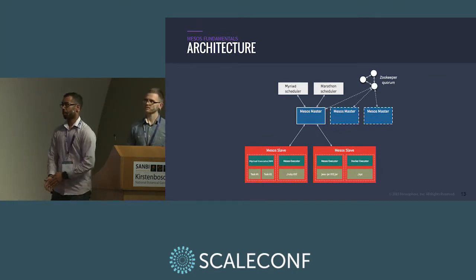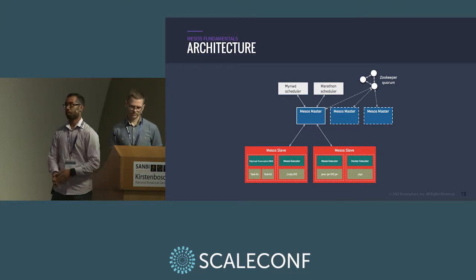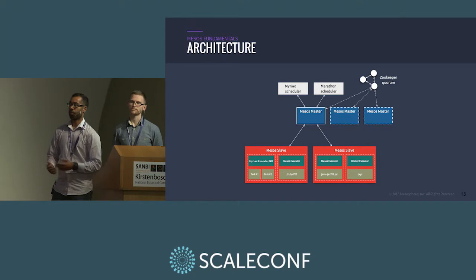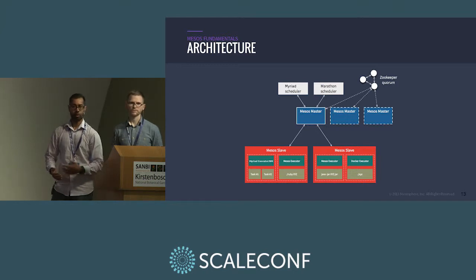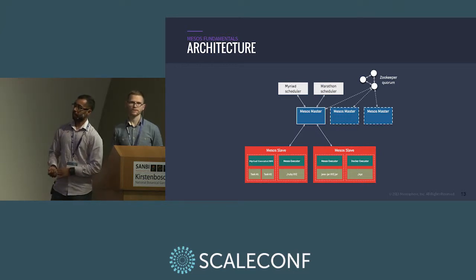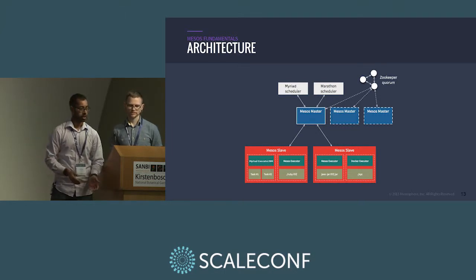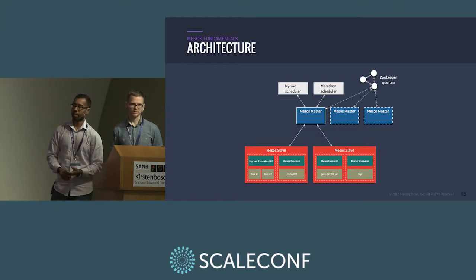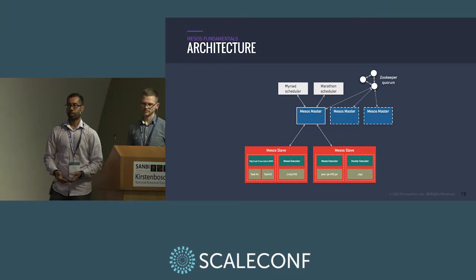This is what Mesos looks like. In the middle, you have a series of Mesos masters — here we're running three, so you can tolerate one node failing. You need a majority to agree who's in charge. Production clusters typically run five; Twitter runs nine. Behind that, you have Zookeeper, which handles leader election to work out which master should be in charge. On the top left, you have schedulers — things that do work. Marathon is one, Myriad is another. You can also run Spark, Jenkins, and Kubernetes as schedulers on top of Mesos.